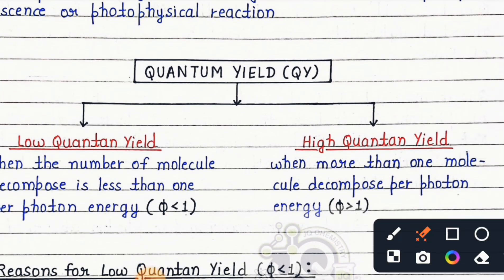two types: low quantum yield and high quantum yield. Low quantum yield is when the number of molecules decomposed is less than one per photon energy. When this number is less than one, it's called low quantum yield. And when it is greater than one per photon, it's called high quantum yield - when more than one molecule decomposes per photon energy, that is φ > 1.